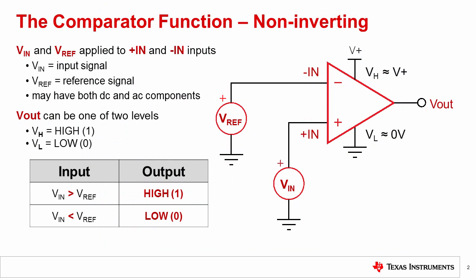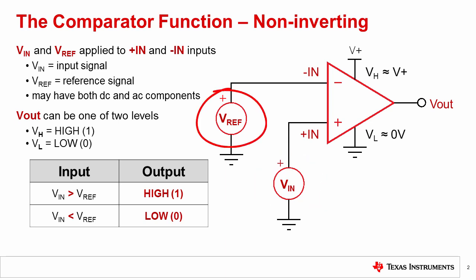Let's begin by introducing the basic functionality of a comparator. Similar to a standard op amp, a comparator has two inputs, one output, and two power supply pins. From a schematic perspective, it looks the same as an op amp, although its intended function is quite different. A comparator gets its name because it compares the voltages applied to its inputs and sets its output voltage based on the input levels. One input is considered to be the primary input signal, or VIN, and the other input is considered to be the reference signal, VREF.